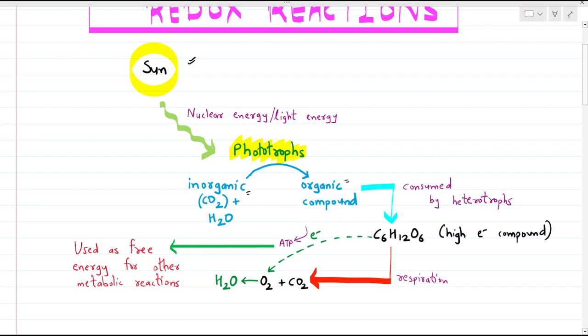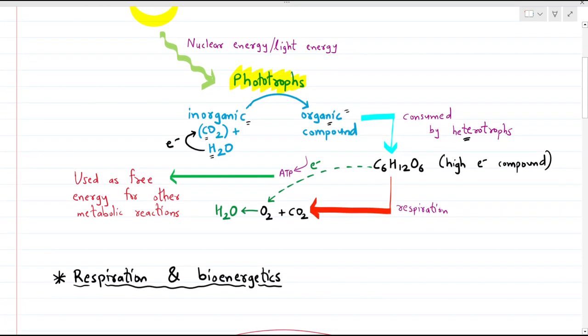On Earth, phototrophs are the only ones which can convert inorganic into organic compounds. For this, phototrophs use carbon dioxide as the carbon source, water as the electron donor, and donate electrons to carbon dioxide to form organic compounds. Initially, these organic compounds are used by the phototrophs, and extra organic compounds are stored as energy and then consumed by the heterotrophs. Without phototrophs, heterotrophs are not possible.